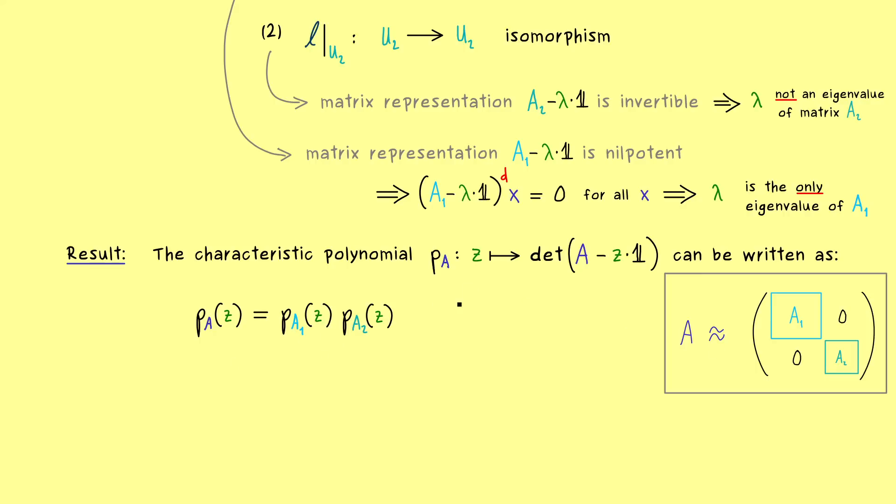And now what we already know of course is that lambda is a zero of the characteristic polynomial on the left hand side. And on the right hand side we know that the first polynomial is of order k and the second one of order n-k. And of course this k is the dimension of our U1 space, which is given as the kernel of A minus lambda identity to the power d.